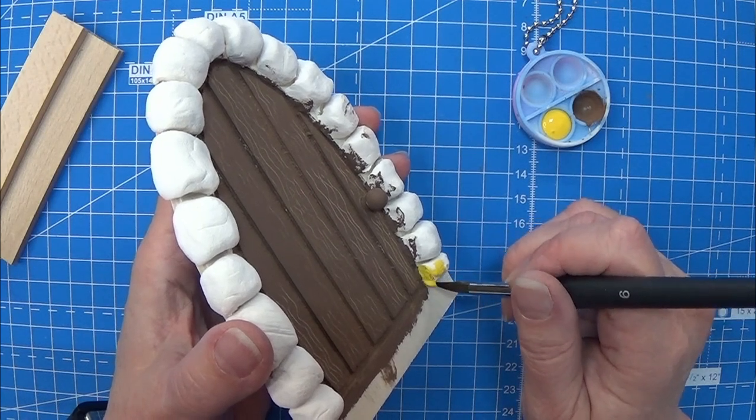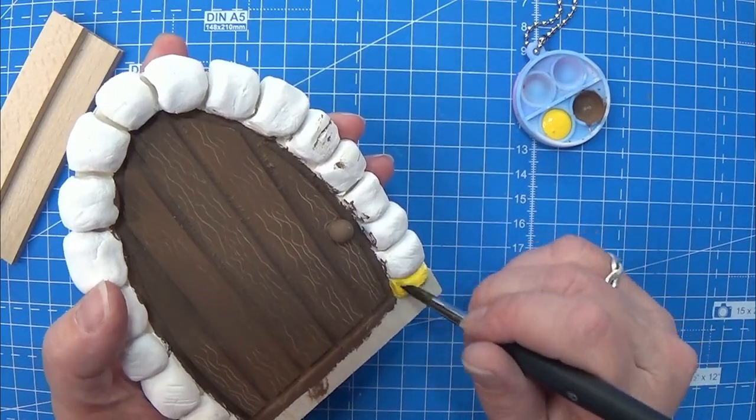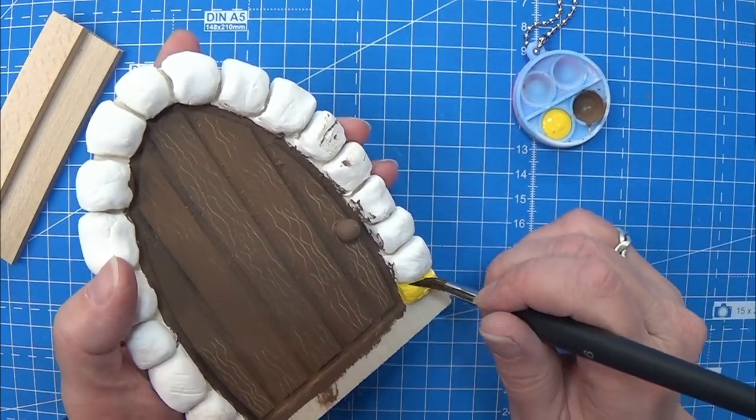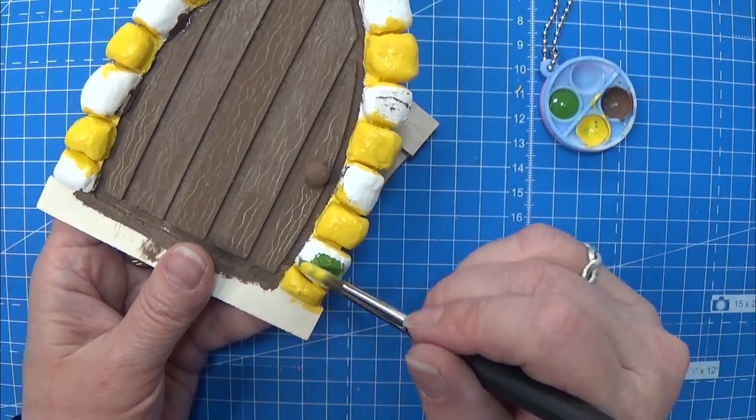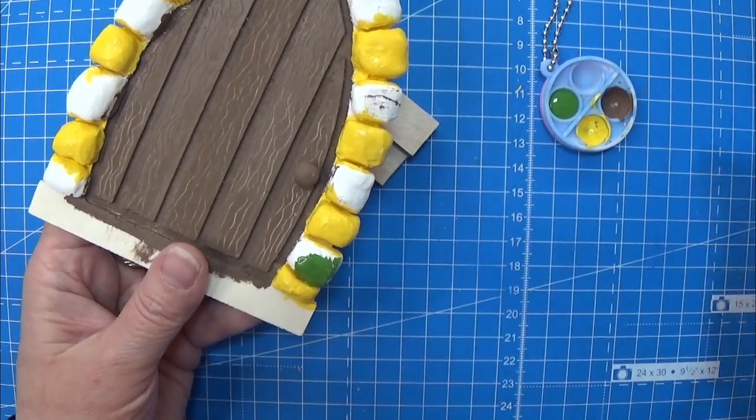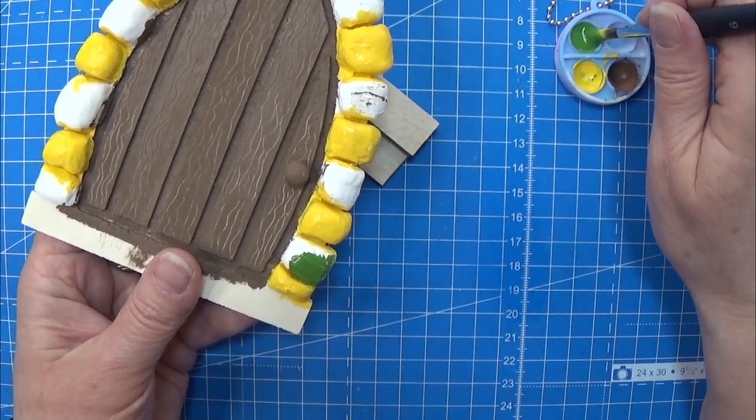So the rocks around the door, I painted every second of them yellow. And all the rest of the stones here I painted in a lighter green.